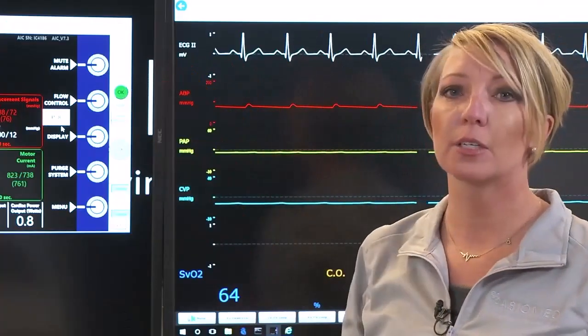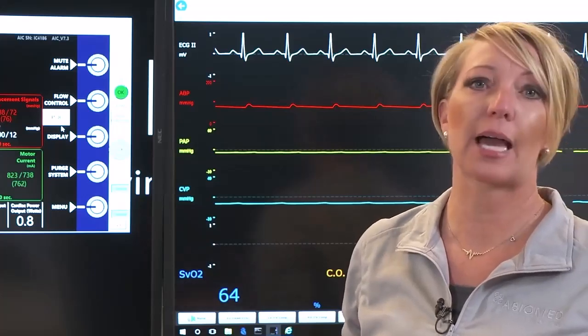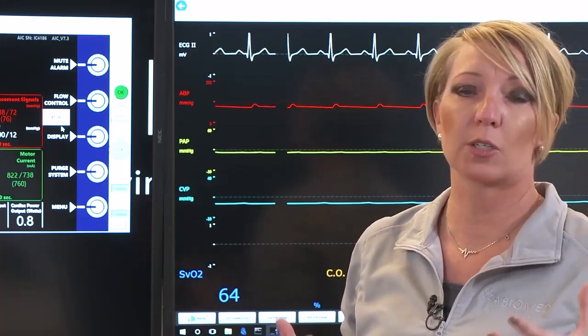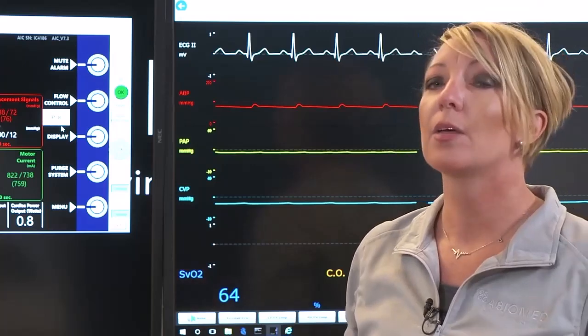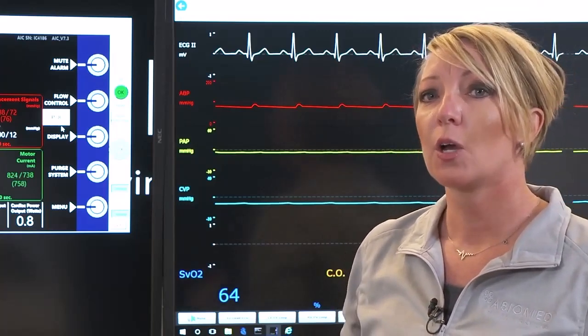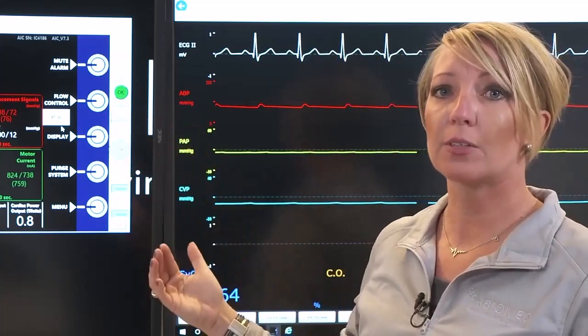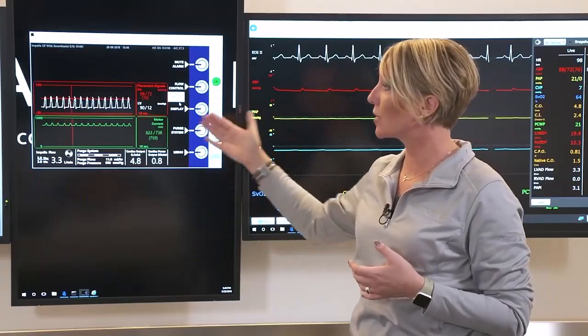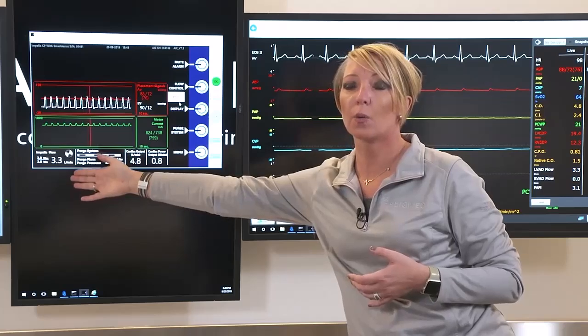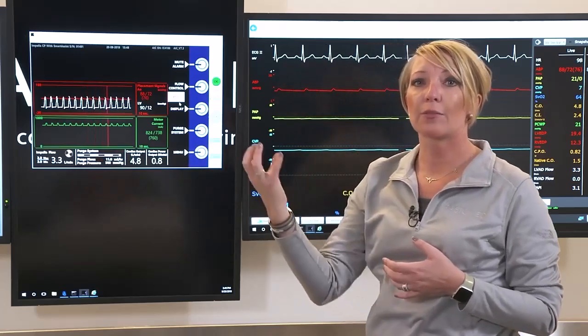The next button down is our flow control button. It does exactly what it says. Anytime you want to control the amount of flow that we're giving that patient, you're going to go into the flow control button. We run the device at different P levels. As you adjust those P levels, that will be reflected in the lower corner where you'll see that flow adjustment.